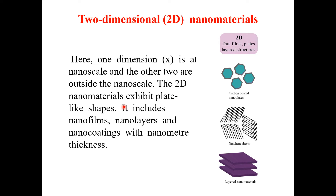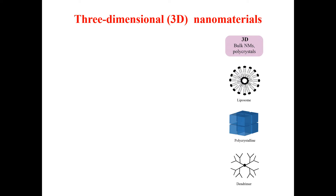Two-dimensional nanomaterials exhibit plate-like shapes. Examples include nanofilms, nanoclays, and nano coatings. Graphene is particularly well-known among 2D nanomaterials. This category also includes layered nanomaterials such as hexagonal boron nitride nanostructures and hexagonal boron nitride nanosheets.